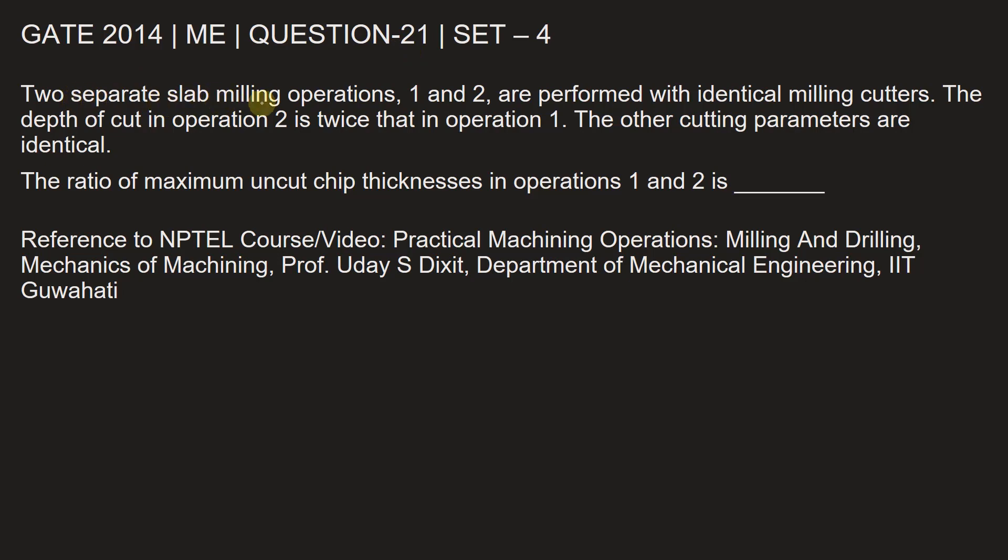Two separate slab milling operations 1 and 2 are performed with identical milling cutters. The depth of cut in operation 2 is twice that in operation 1. The other cutting parameters are identical. The ratio of maximum uncut chip thicknesses in operations 1 and 2 is to be found.